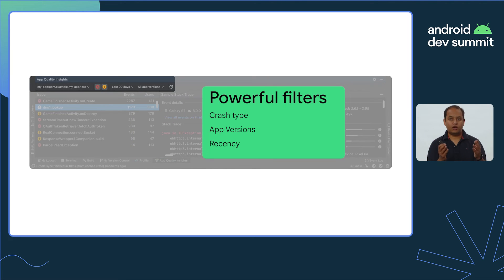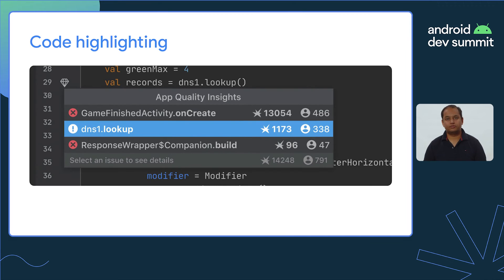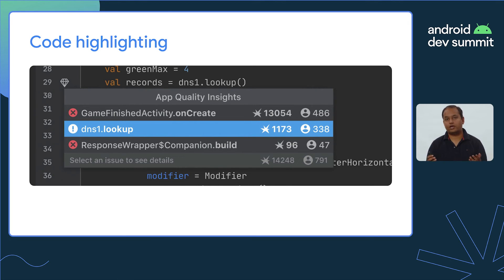If you want to narrow down the scope of crashes listed, you can quickly filter by crash type, app version, or even recency. To catch potential crashes in the code you're already working on, Android Studio highlights the lines of code that are associated with known crash issues, so you can quickly pull up those stack traces in App Quality Insights to investigate.